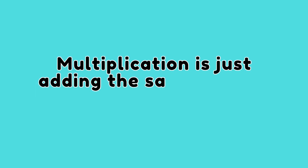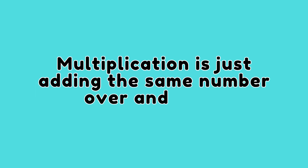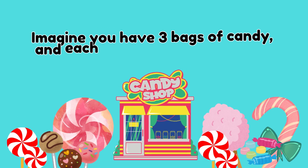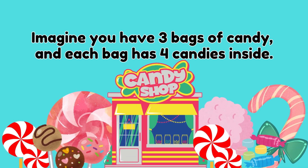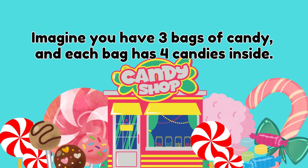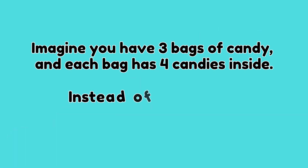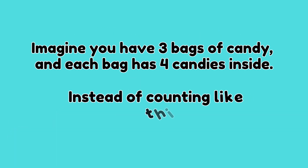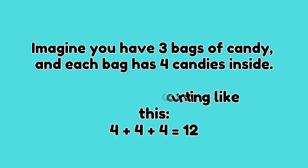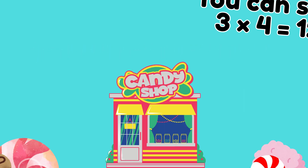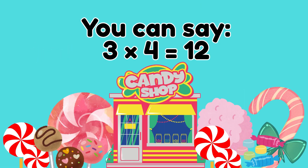Multiplication is just adding the same number over and over. Imagine you have three bags of candy and each bag has four candies inside. Instead of counting like this — four plus four plus four equals twelve — you can say three times four is equal to twelve.